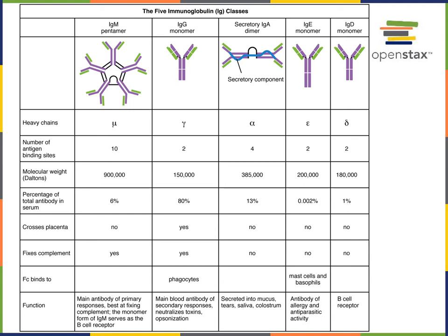IgA is the primary form of antibodies secreted by exocrine glands and secreted onto mucous membranes. IgA is a dimer where two IgA antibodies are linked together, creating a structure with four antigen binding sites.